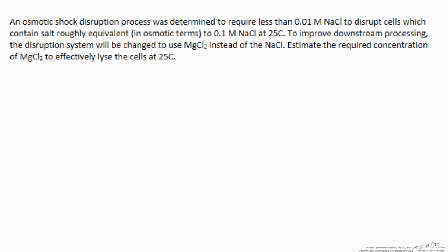In this screencast we're going to use osmotic shock as a method of disrupting cells. We're given information about the concentration of salt required to disrupt cells using osmotic shock, osmotic pressure, and the concentration of salt contained within the cells themselves. To improve downstream processing, we'd like to change the salt we're using to magnesium chloride instead of sodium chloride, and we want to estimate the concentration of magnesium chloride needed to effectively lyse these cells.